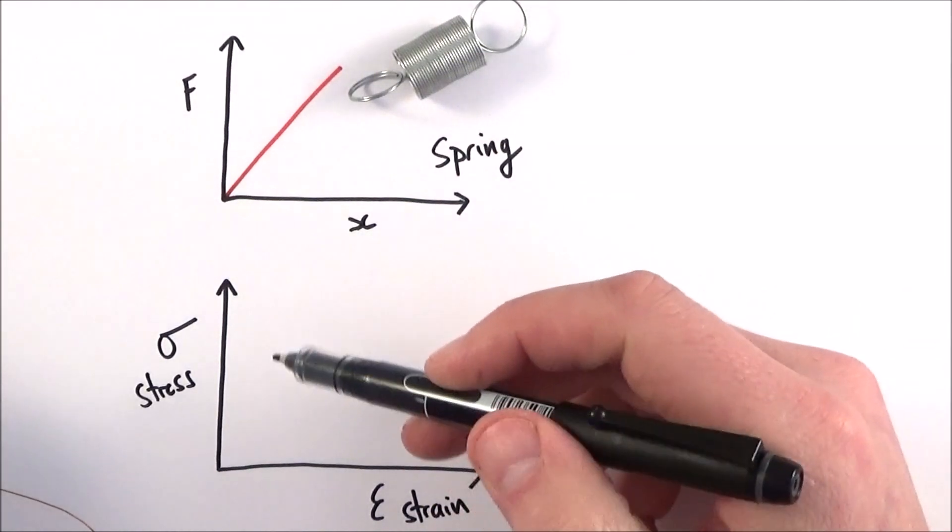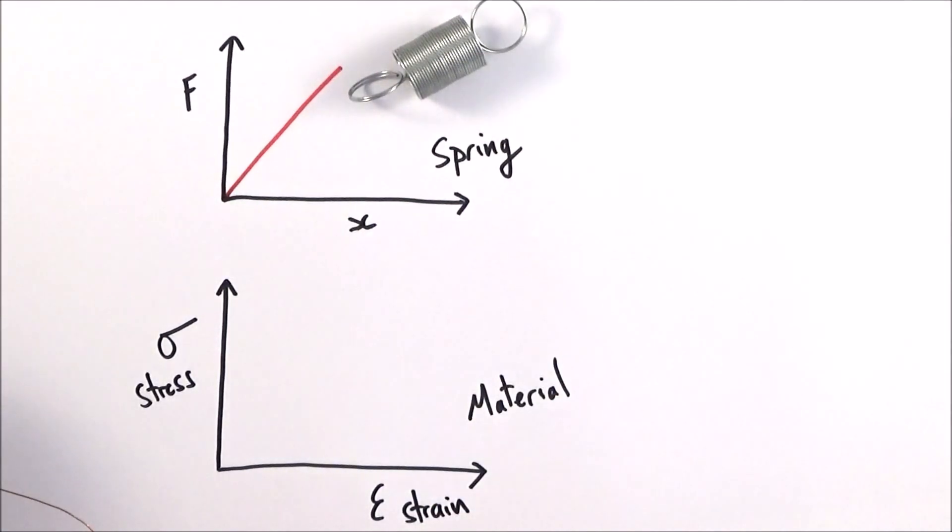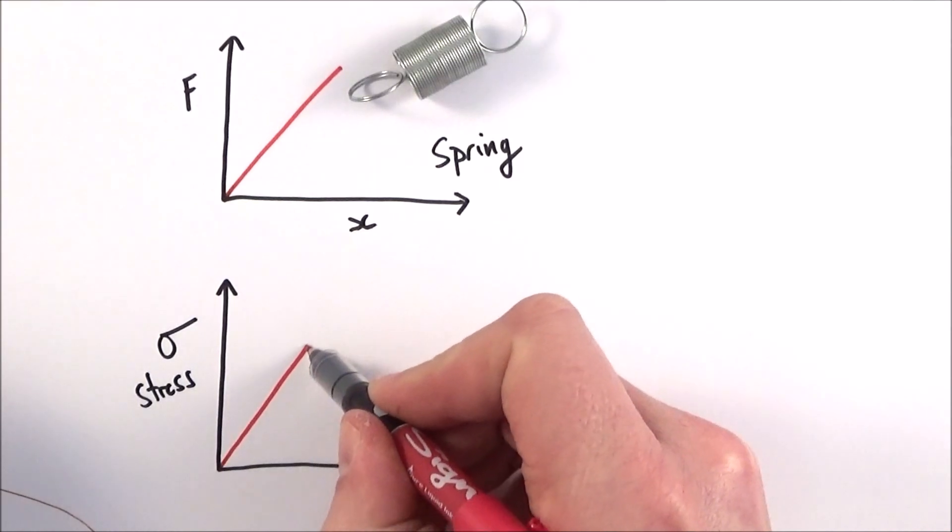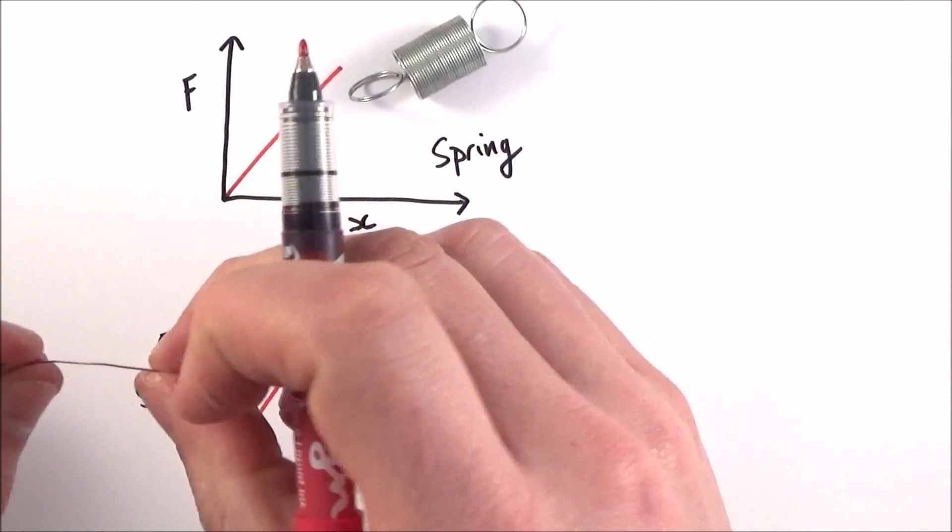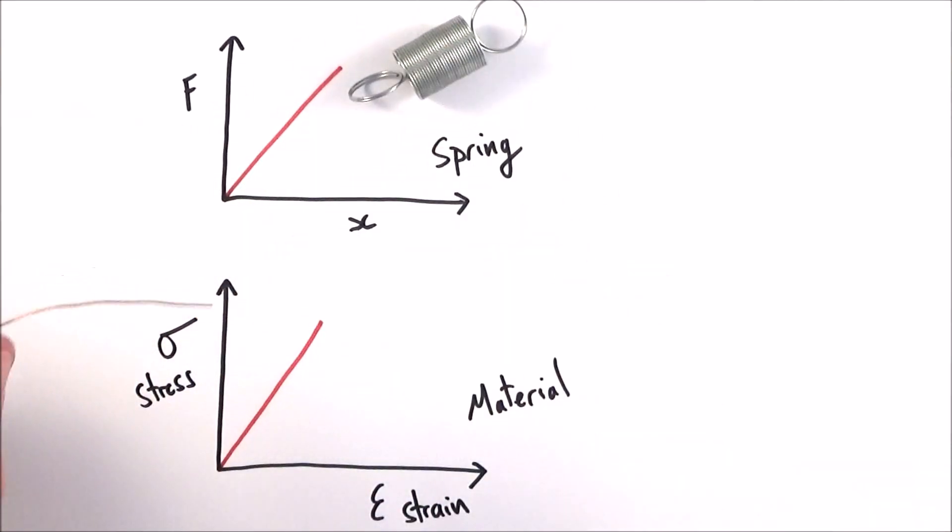What we have now is a stress-strain graph, and if we have copper perhaps we might have this elastic or proportional region where if you stretch it a little bit and then you let it go, it goes back to the original length.